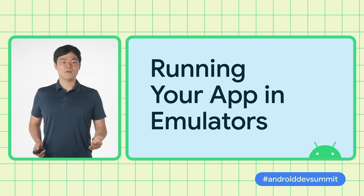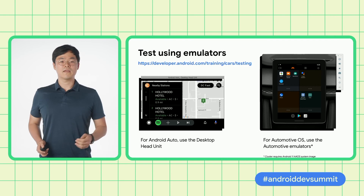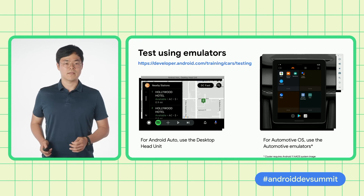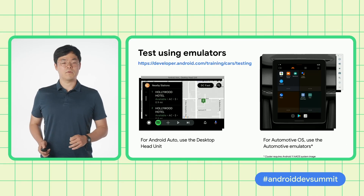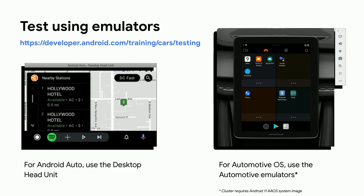Now is the time to see our app in action. In the next section, we will explain how to run a car app in Android Auto and Automotive OS emulators. The link in the slide has instructions on how to download and run the emulators. Make sure you build and install your car app's Android Auto build target on the phone to run it in the desktop head unit. Similarly, build and install the Automotive OS build target in Automotive emulators. When you run your app in the emulators, you can also see the cluster display, which may show navigation or other relevant information. Also, you can test voice commands in the emulators if your app is integrated with the voice assistant.